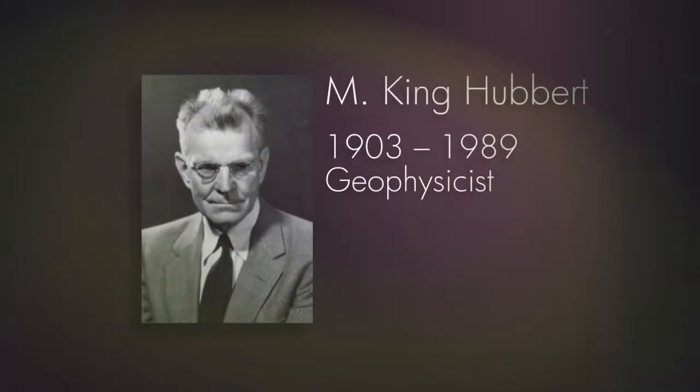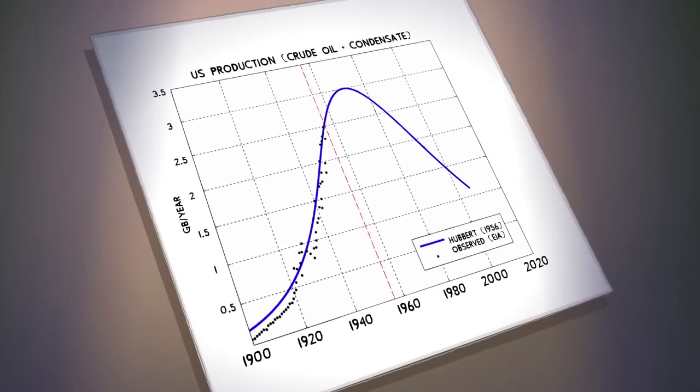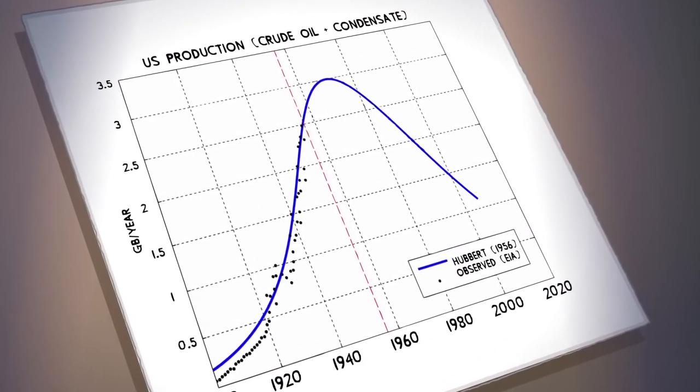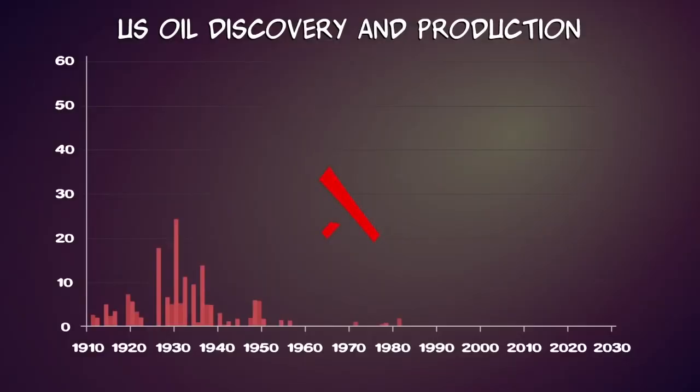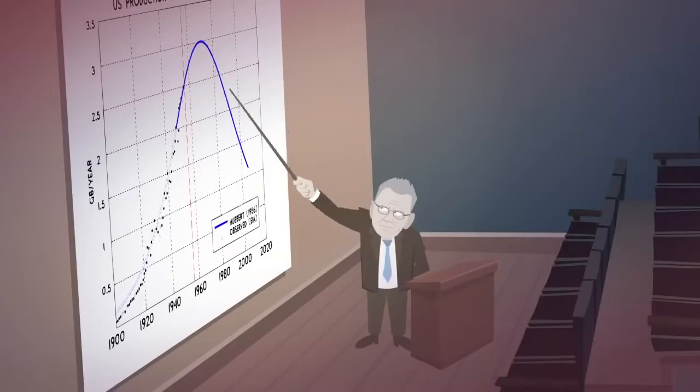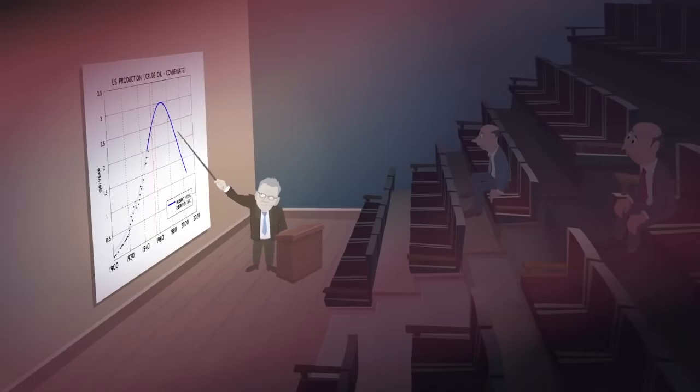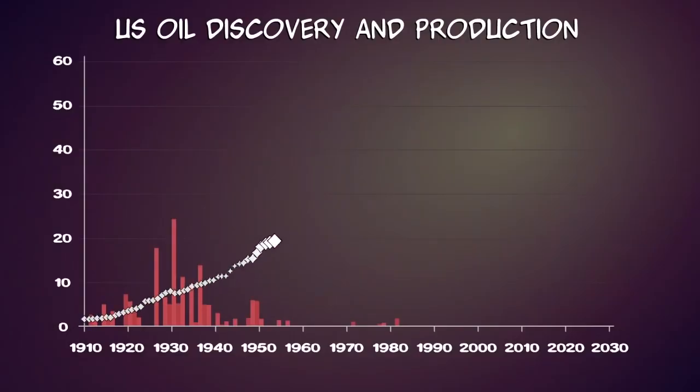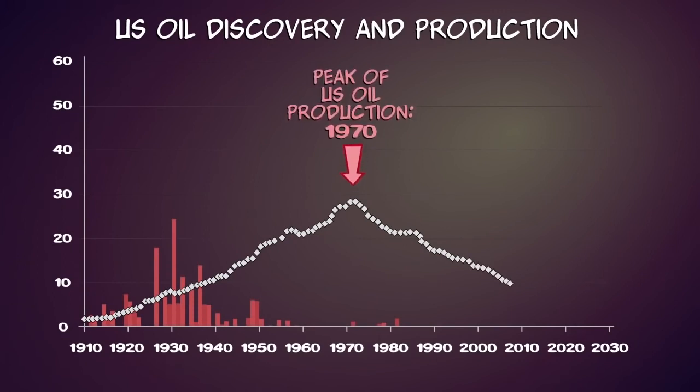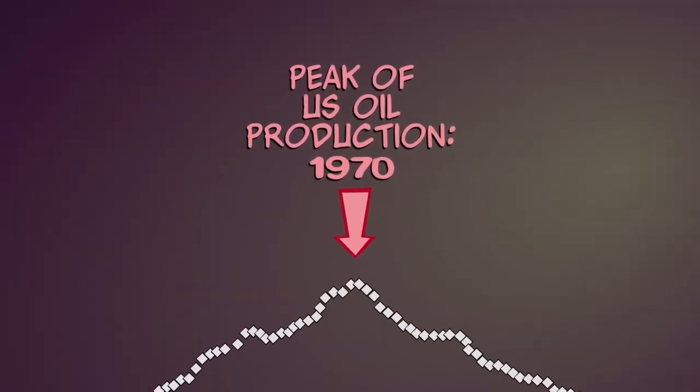In the 1950s, Shell geophysicist M. King Hubbert predicted that America's oil production would peak in 1970, 40 years after the peak of US oil discovery. Few believed him. However, in 1970, American oil production peaked and entered a permanent decline. Hubbert was vindicated.